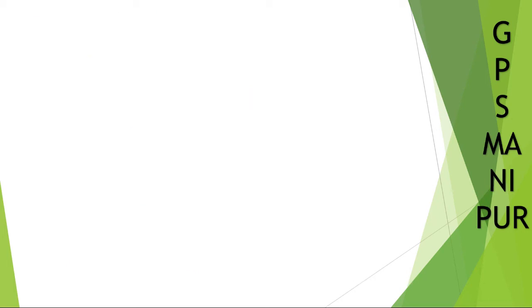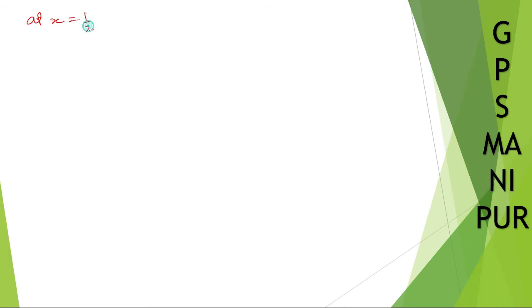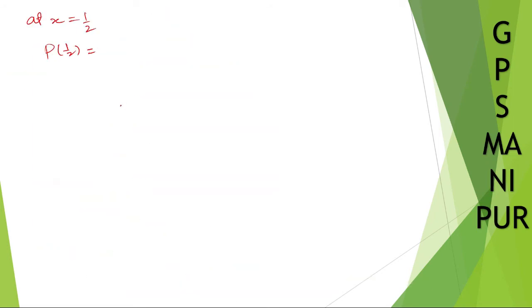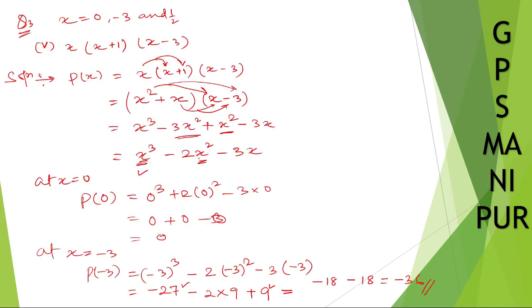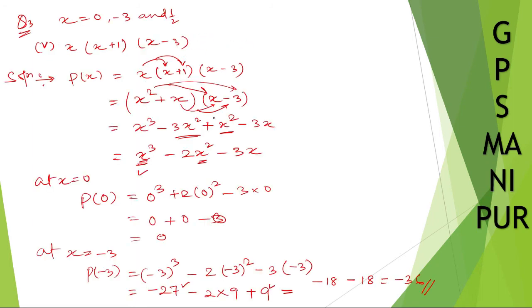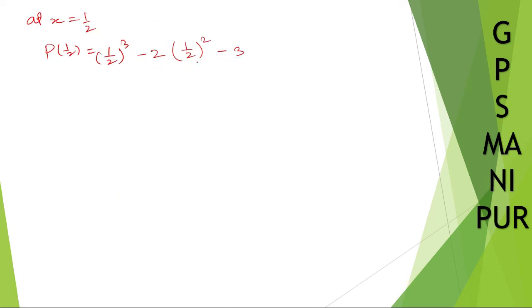Now let me do the next point, x equal to 1 by 2. So P of 1 by 2: instead of x, we are putting 1 by 2. So: 1 by 2 whole cube, minus 2 into 1 by 2 whole square, minus 3 into 1 by 2.